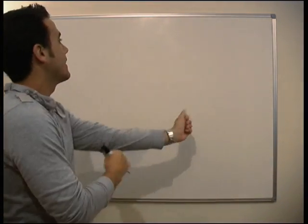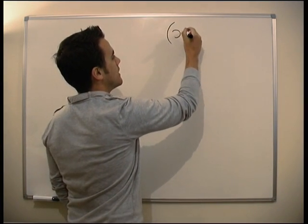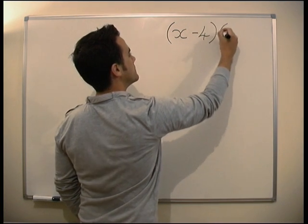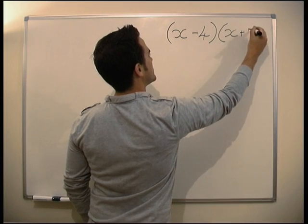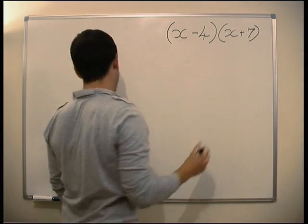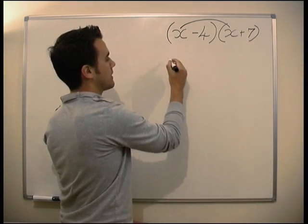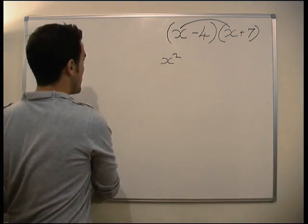Let's look at another example: (x - 4)(x + 7). Same again, let's draw those lines on. x times x gives us x².